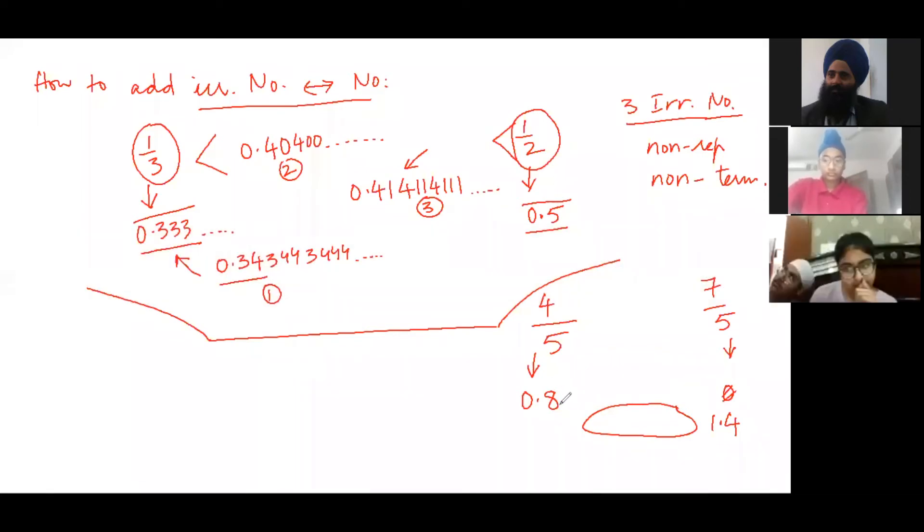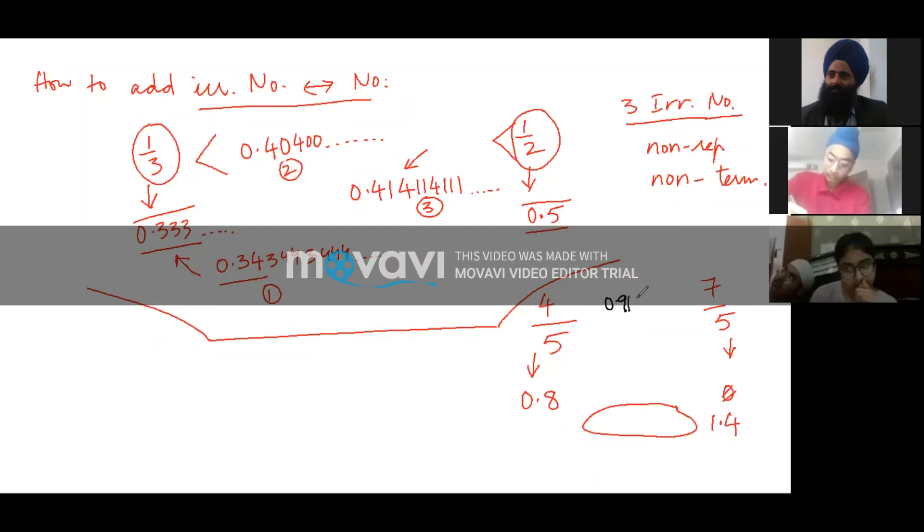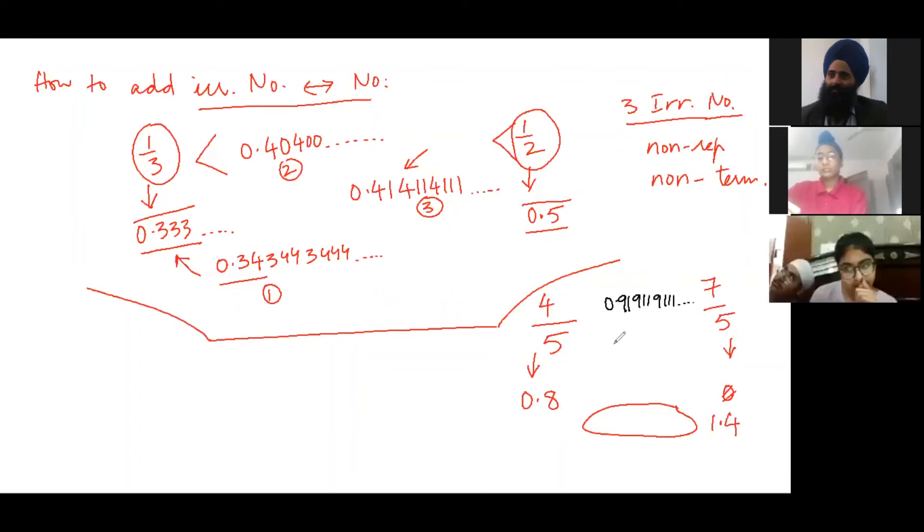So you have 0.8. Instead of 0.8, the number should be a little more than this. So I can write here 0.91, 911, 9111. You can make any pattern you want. You can also write 0.92 because 92 is more than this but less than this. First number.